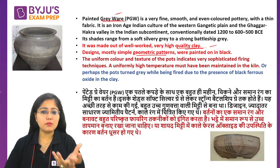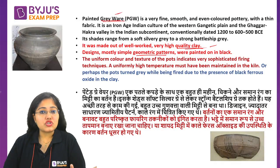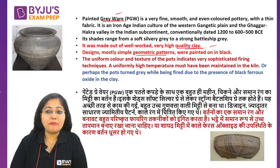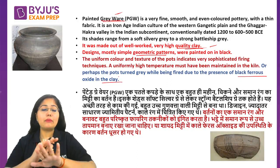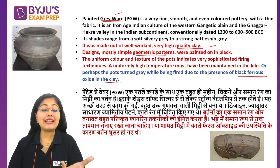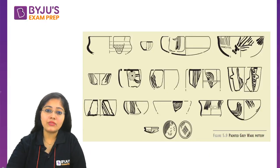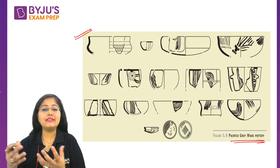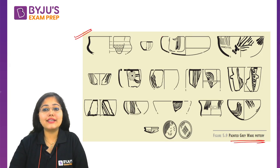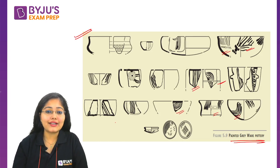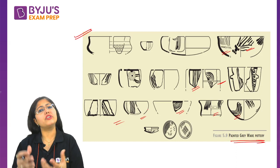The grey color comes from the ferrous oxide clay used before firing. Once fired, the pottery turns grey. You can see some examples of Painted Grey Ware pottery on screen. The geometrical designs and patterns are clearly visible, generally painted in black color.